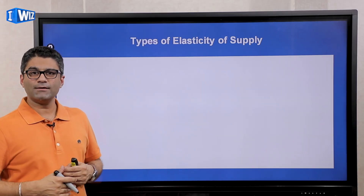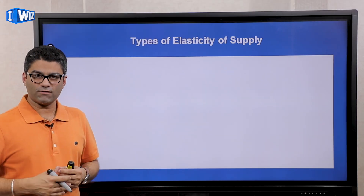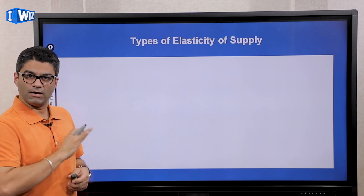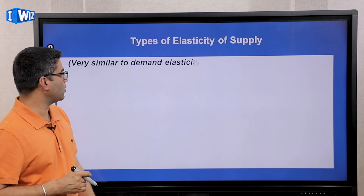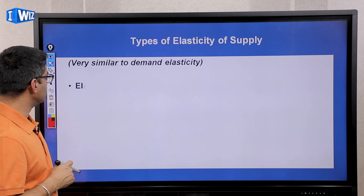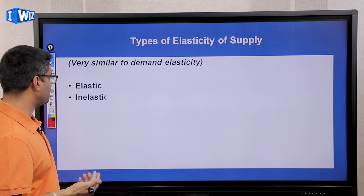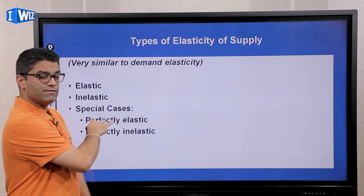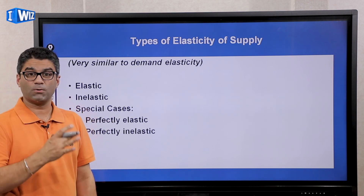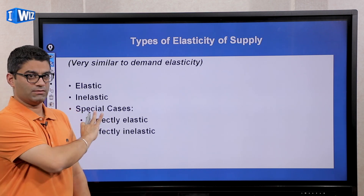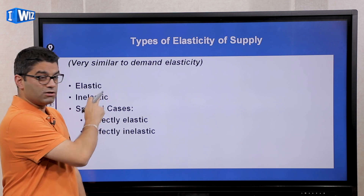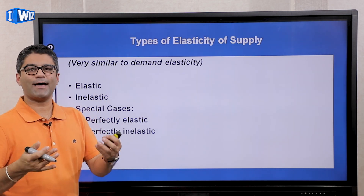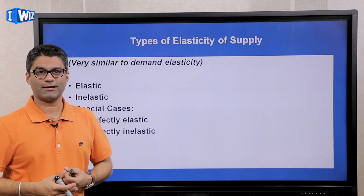Just like the demand side, we're going to look at how many different kinds of supply curves there are in terms of elasticity. We're going to look at four cases: elastic supply curve, inelastic supply curve, and then the special cases of perfectly elastic and perfectly inelastic. These terminologies should not be new — we're just applying them to the supply side.